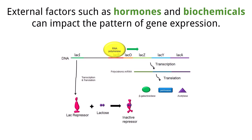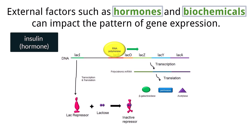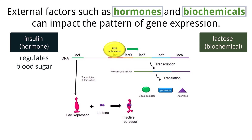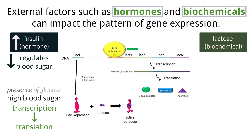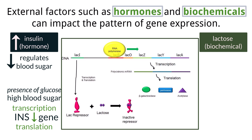There are external factors that affect the pattern of gene expression, such as hormones and biochemicals. One hormone is insulin, and one biochemical is lactose. Insulin is an important hormone as it regulates blood sugar. If blood sugar rises, insulin is produced and secreted into the bloodstream, causing glucose to be taken up by cells as well as conversion of glucose to glycogen, which then lowers blood sugar. Insulin is actively transcribed and translated when blood sugar levels are high. It is the presence of glucose in the blood that triggers transcription of the insulin gene, INS. Transcription factors attach to the enhancer region of INS and allow transcription to begin. When blood sugar levels drop, transcription is stopped. Prokaryotes also regulate transcription.